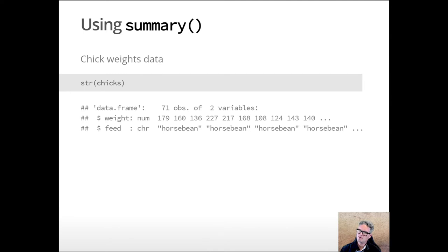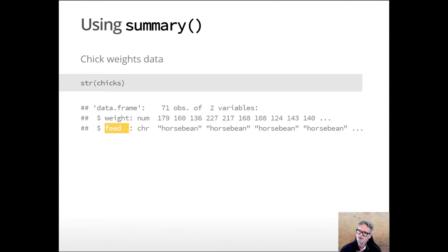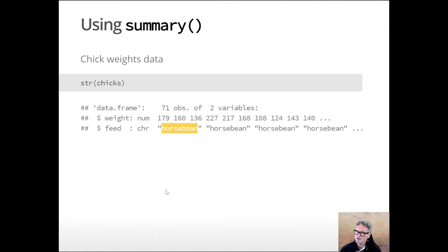If we use the str() — structure — function, we can look at the structure of a data frame. We can also see this visually in the global environment in R. This tells us that weight is indeed a numeric variable, and gives us a peek at the first values. Feed is read in as a character string — really it's a factor, and we would want to treat it as such if we model it statistically. But it's read in by the passive aggressive butler as a character string. The first several rows of values shown are all 'horsebean'.